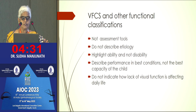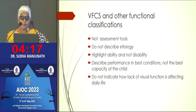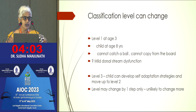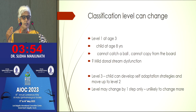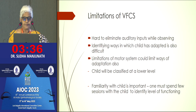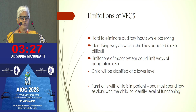The VFCS only defines use of vision in day-to-day activities. It is not an assessment tool, does not describe etiology, and only describes how the child is performing in best conditions — their actual capacity to improve may be much more. We must also understand that in all classifications, whether VFCS or others, levels can change. A child who seems to have good vision when young may struggle when visual demands increase in higher classes, such as copying from the blackboard or participating in games. A child taught compensatory strategies can move up one level. We must repeat this assessment every couple of years.